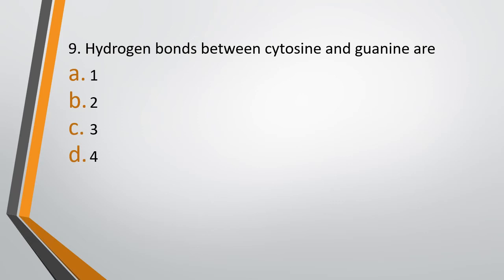Question 9. Hydrogen bonds between cytosine and guanine are: Option A, 1; Option B, 2; Option C, 3; Option D, 4. The correct answer is Option C — there are 3 hydrogen bonds between cytosine and guanine. And there are 2 hydrogen bonds between adenine and thymine.